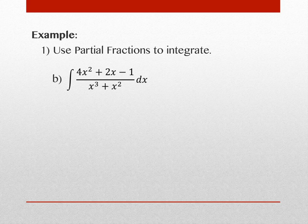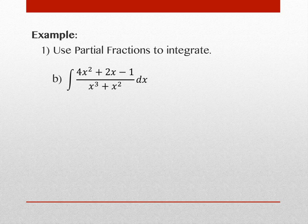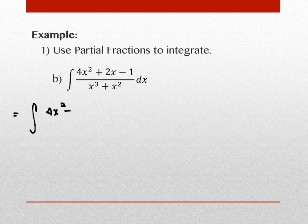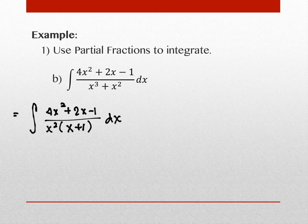Step two: factor the denominator. We're going to pull out an x² and then we have (x + 1). So the denominator factors as x²(x + 1). Probably your gut reaction is that this is two separate factors and you'd make two fractions — but your gut is wrong. There are three factors here. The difference from the last one is that one of my factors is squared.